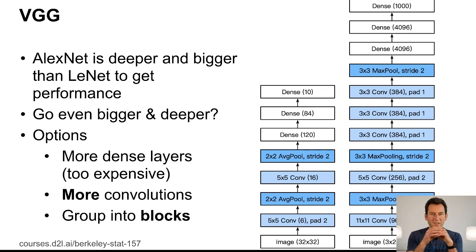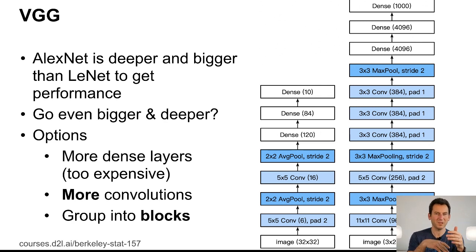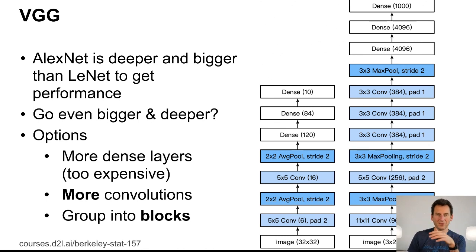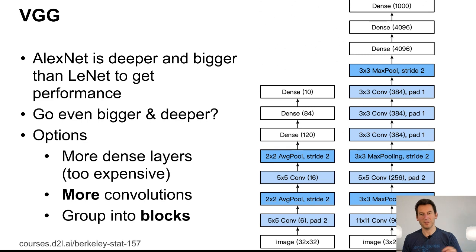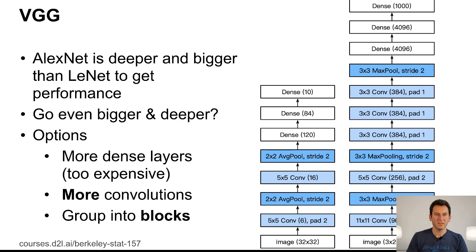Comparing AlexNet and LeNet, one option was to add even more dense layers — but that's expensive — or add more convolutions. At some point, you get tired of defining every convolution separately, so you group them into blocks. For AlexNet, with maybe a dozen layers, you can still write them out explicitly, but once you go to 20, 30, or 40 layers it gets quite annoying. The key innovation in VGG, in hindsight, is this grouping into parameterizable repeated blocks used for computer vision.